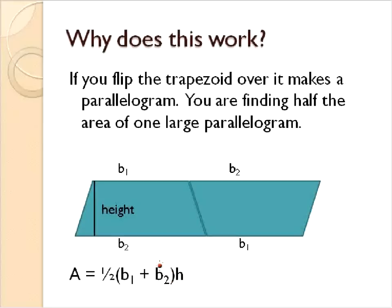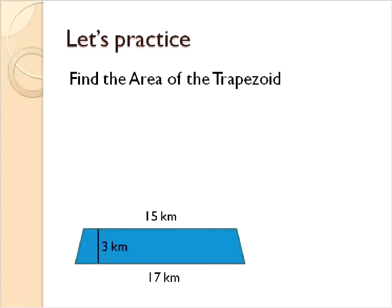So for the parallelogram, we do the base times the height. The base is these two numbers added together. Base 1 and base 2 added together times the height. And we'll take half of that, because we're only looking for one of these shapes, not both of them. And so that's going to give us the area of this trapezoid. Let's look at a couple questions using this equation.